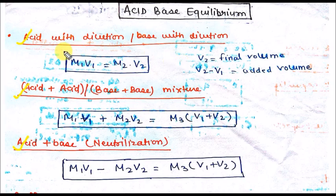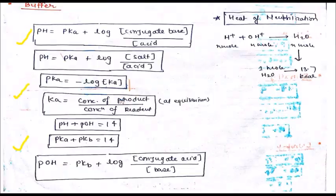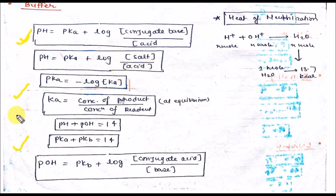Here is the dilution formula, the acid-solution mixer formula, and the neutralization formula. You can calculate the pH by this formula: pH equal to pKa plus log of conjugate base divided by acid, or salt upon acid.